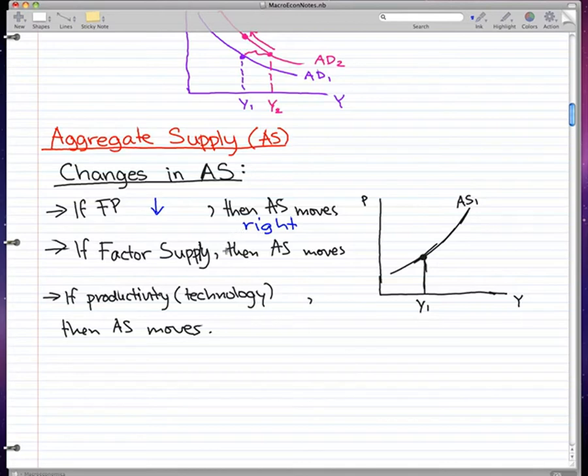If factor supply increases, then aggregate supply moves right, and that's pretty much a repeat of the first one I guess.